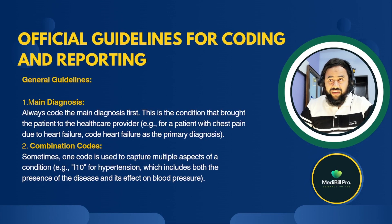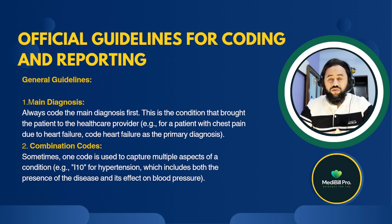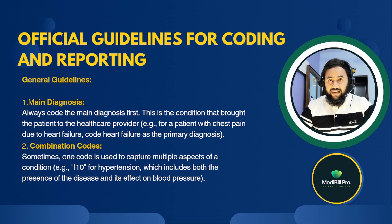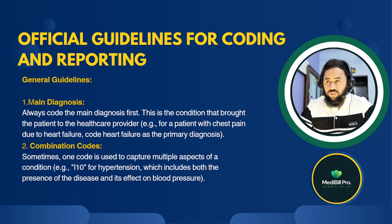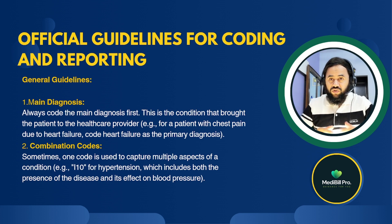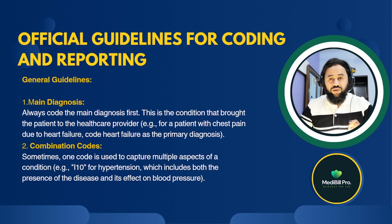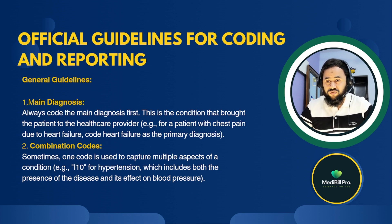There are official guidelines for coding and reporting — both general and specific. The first general guideline is the main diagnosis: always code the main diagnosis first, which is the condition that brought the patient to the healthcare provider. For example, for a patient with chest pain due to heart failure, code heart failure as the primary diagnosis. The second guideline is combination codes — sometimes one code captures multiple aspects of a condition. For example, I10 for hypertension includes both the presence of the disease and its effect on blood pressure.